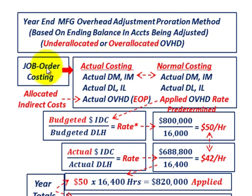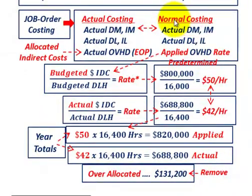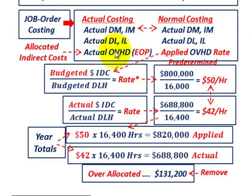In job order costing, we would have used normal costing, where we used an applied or predetermined overhead rate for the jobs that went through for the year. But at the end of the year, we now know our actual overhead costs or indirect costs. So there's going to be a difference between what we applied versus our actual overhead, and we're going to have to make an adjustment.